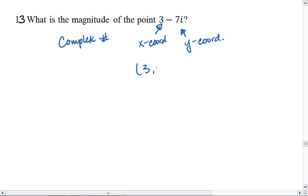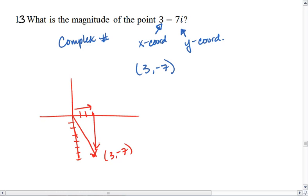So this would be 3, negative 7. Its magnitude is its distance away from the origin. So here we have 3, negative 7. The way we find its magnitude is we take its horizontal distance and vertical distance and use the Pythagorean theorem.